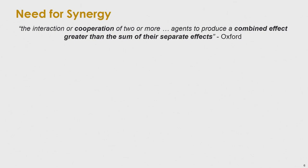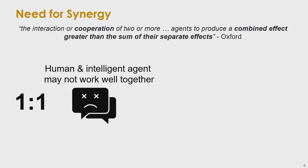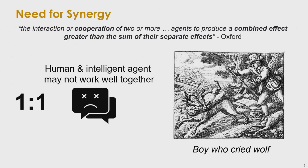Are there issues with synergy between human and AI agents? In the common one-to-one setting — one developer working with one intelligent agent — there are often issues. One of the common issues is false positives. Developers do not like false positives. If they see a lot of false positives, they will lose trust in AI tools and cannot synergize with them — similar to the fable of the boy who cried wolf.